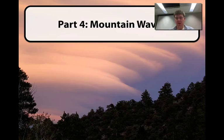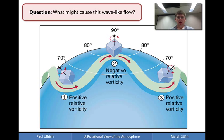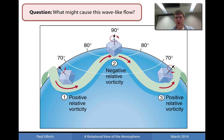What is typically observed in the northern hemisphere, especially in the northern latitudes, is the existence of large wave-like features. These are usually waves which have a wavelength of tens of thousands of kilometers and stretch over much of the northern hemisphere.